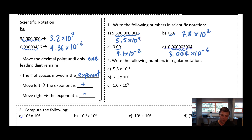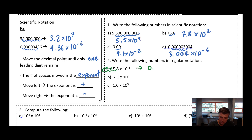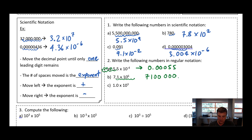Now if we need to write numbers going the other way back into regular notation, we just do the opposite. I start with my decimal place where it is, move four spaces — and since it's a small number I move the decimal to the left — one, two, three, four spaces, filling in with zeros. So that becomes 0.000055. For the next one, 7.1 times 10 to the 6, I move one, two, three, four, five, six spaces, so I get 7,100,000. And 1.0 times 10 to the 3, I move one, two, three spaces and this becomes 1,000.